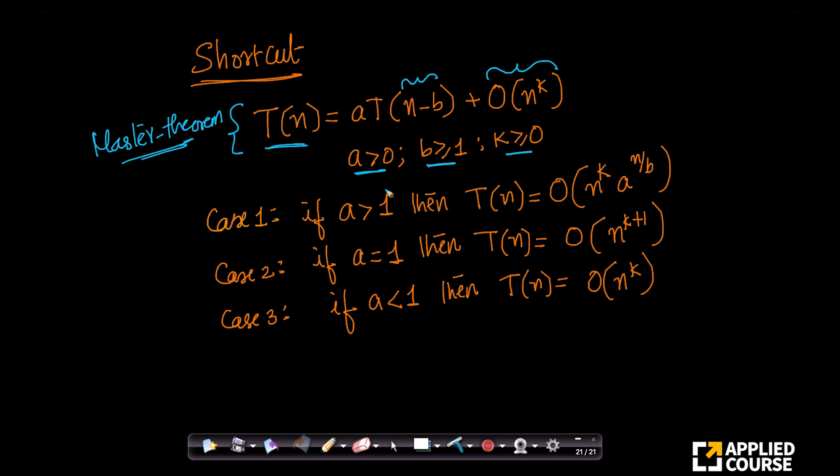There are three cases here based on a. If a is greater than 1, then T(n) is big O of n^k times a^(n/b). If a equals 1 exactly, then T(n) is big O of n^(k+1). You don't have to worry about b anymore. If a is less than 1, then T(n) is big O of n^k.